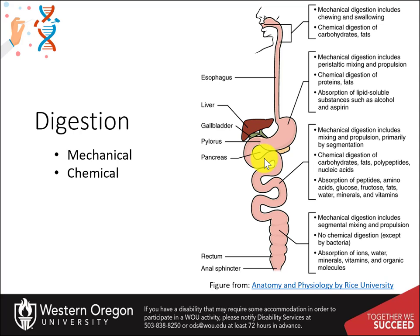Usually for macromolecules, it involves breaking down the macromolecule into the individual building blocks. For example, amino acids from proteins, sugars from carbohydrates, nucleic acids into nucleotides, and fats into fatty acids and glycerol.